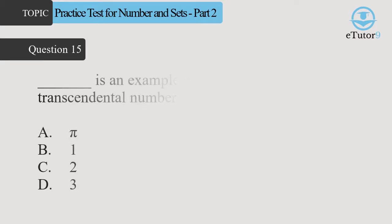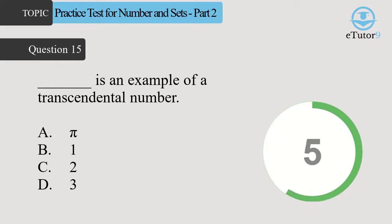Question 15. Blank is an example of a transcendental number. Answer is D. So guys.